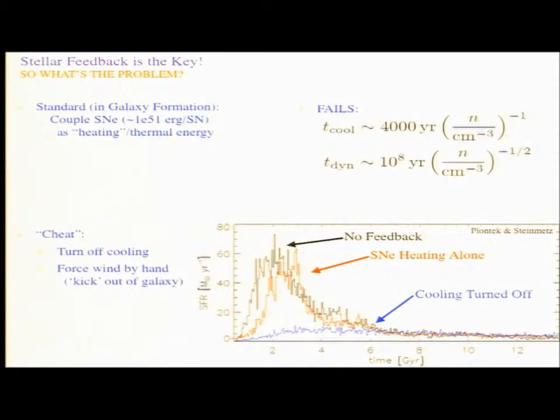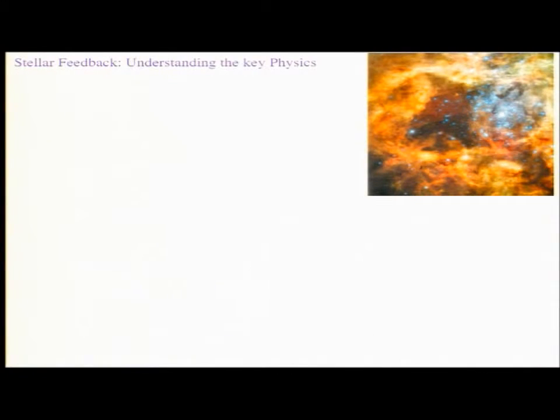When you do these things, you can get answers that start to look better. This is just one cosmological simulation of a Milky Way-like galaxy with no feedback, where everything cools and turns into stars in the first few dynamical times. If you just turn on supernova heating with no fudge, it doesn't help. But when you use these more elaborate prescriptions, you can get something that looks good. But the question is, are these cheats justified? Are these subgrid prescriptions actually related to the real physics of the ISM?